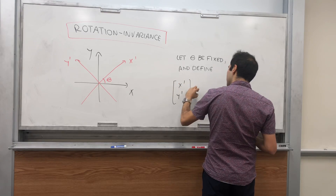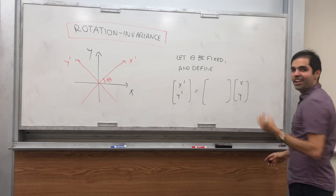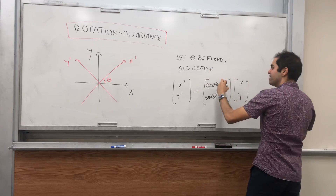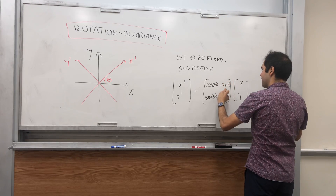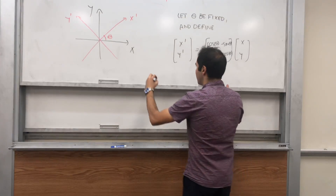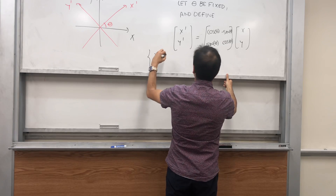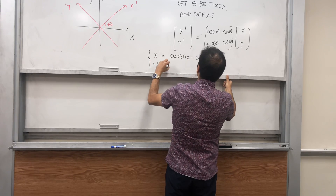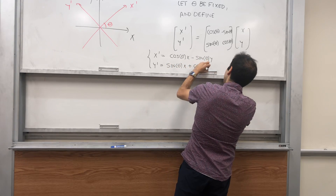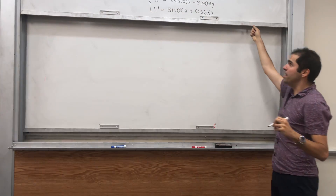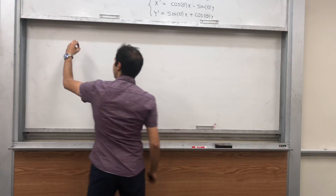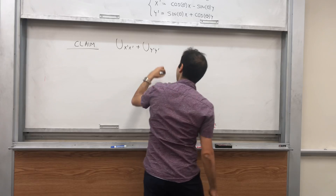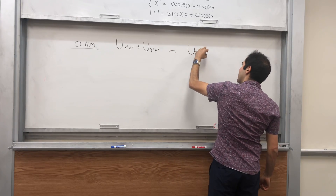So x prime and y prime equals something times x and y. The formula is cosine theta, sine of theta, minus sine of theta and cosine theta. Explicitly, x prime becomes cosine of theta times x minus sine of theta times y, and y prime equals sine of theta times x plus cosine theta times y. Then I'm claiming with this new change of variables, the Laplacian becomes the same.